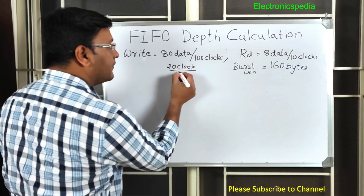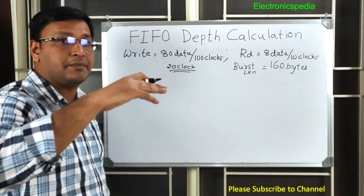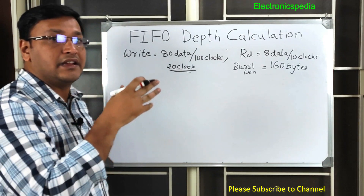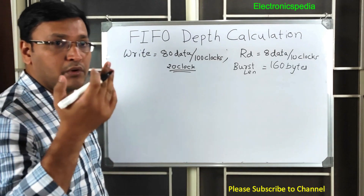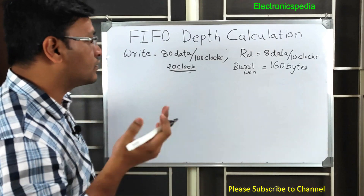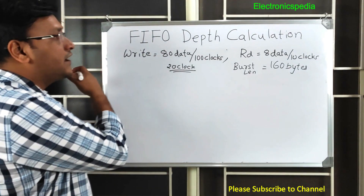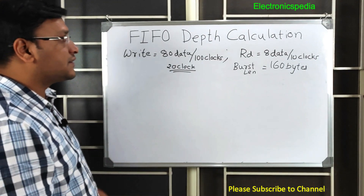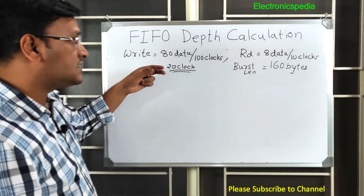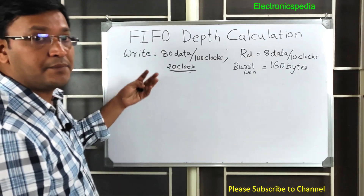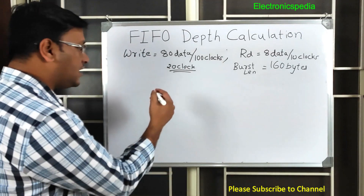With 20 clock cycles of randomization, your data may be written continuously, or it's possible that some 10 bytes of data might be written with one or two clock cycle idle gaps in between. Any kind of randomization is possible. With that in mind, we need to analyze the different possible scenarios that we usually encounter.